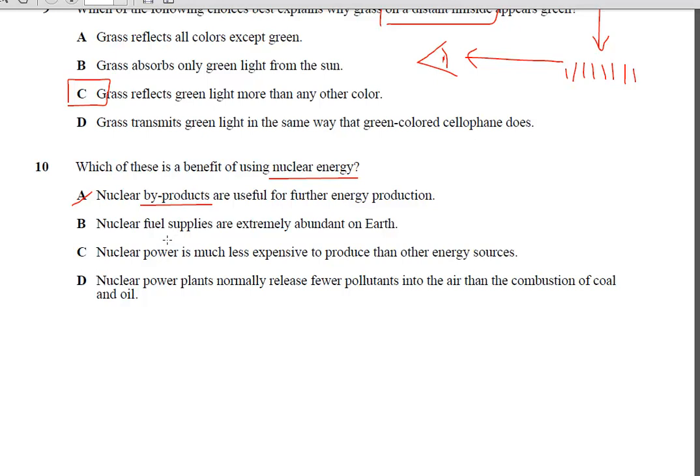B. Nuclear fuel supplies are extremely abundant on Earth. Well, the reason we use coal and oil is because it's very abundant. Pretty much easy to get to. Nuclear fuel is made from an element called uranium, which isn't nearly as abundant as coal and oil. So, no.